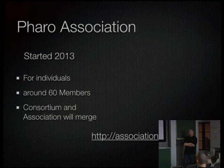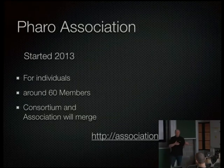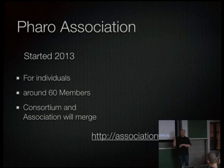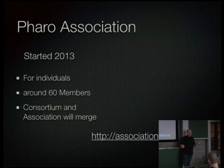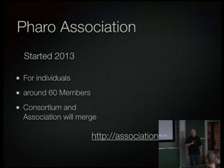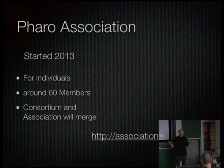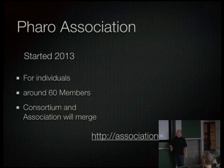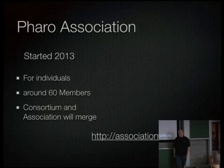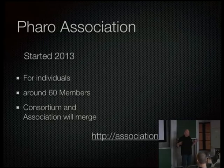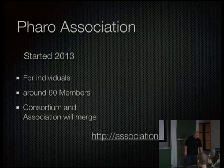Originally we wanted both companies and individuals in the consortium, but INRIA — which manages the consortium as a government entity — was not able to handle individual contributions. So we have a consortium for companies and institutions, and an association for individuals, which now has around 60 members. The idea is that at some point the consortium and association may be merged into one entity.